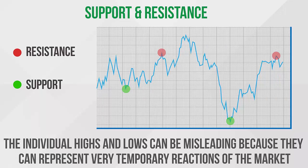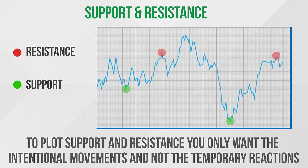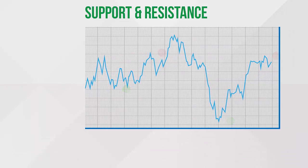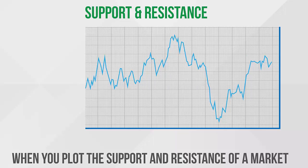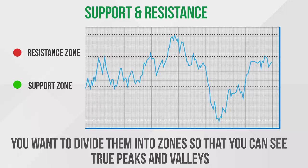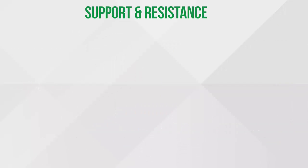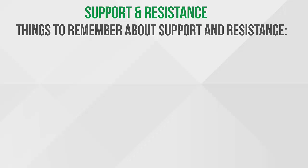A line chart only shows closing prices and not individual highs and lows. The individual highs and lows can be misleading because they can represent very temporary reactions of the market. To plot support and resistance levels, you only want the intentional movements and not the temporary reactions. When you plot the support and resistance of a market, you want to divide them into zones so you can see true peaks and valleys. These zones will help you determine true breaks in support and resistance rather than false ones that can cause you to lose money.